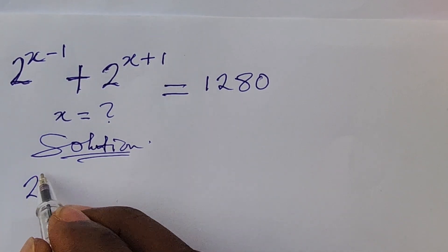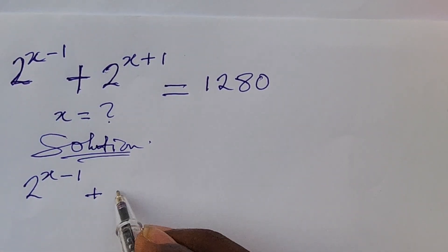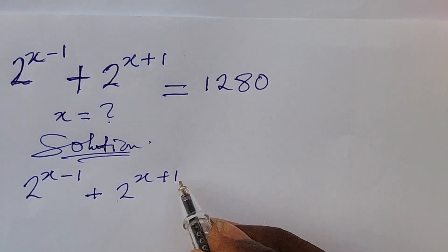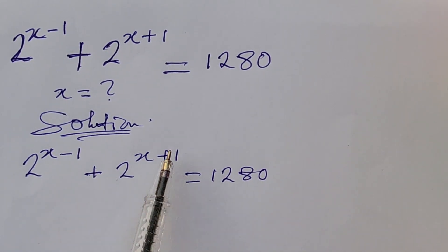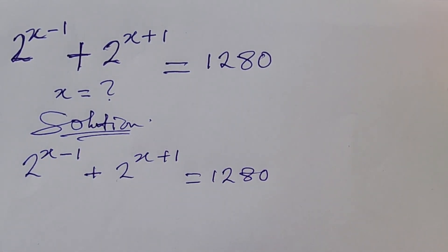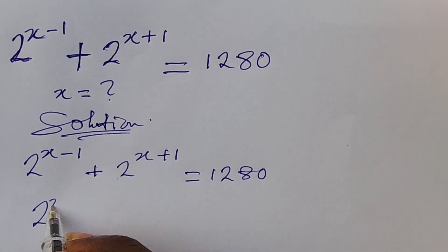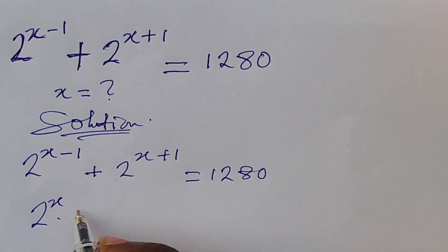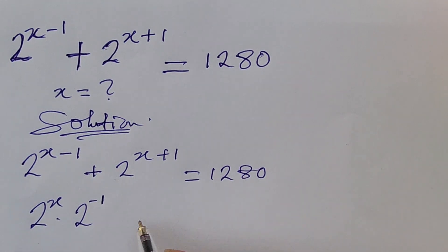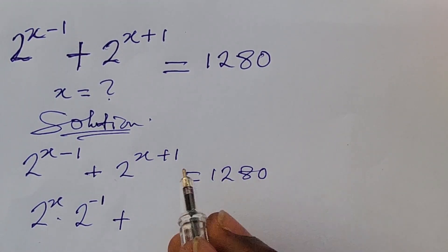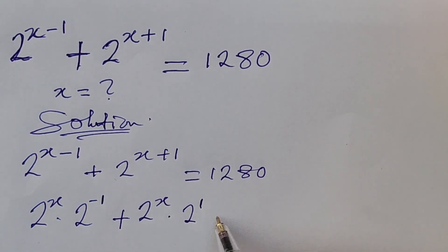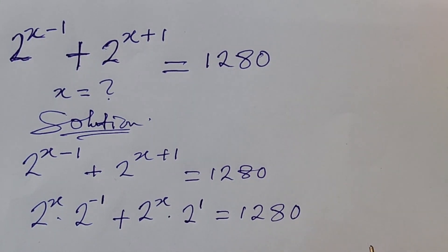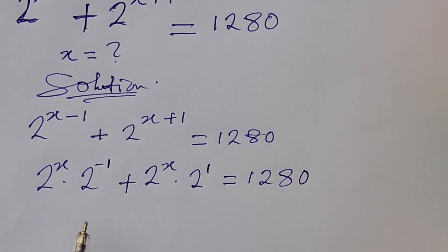The question we can put down is: 2 to the power of x minus 1, plus 2 to the power of x plus 1, equal to 1280. The first thing we do here is rewrite the exponents. According to the law of indices, we can write this as 2 to the power of x times 2 to the power of minus 1, plus 2 to the power of x times 2 to the power of 1, everything equal to 1280.